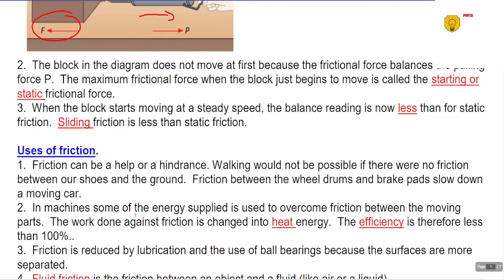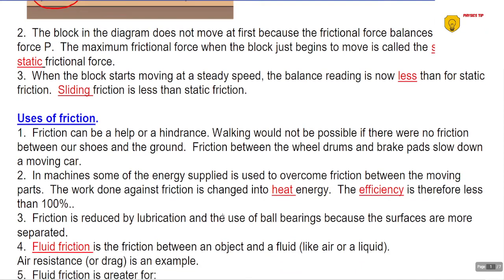In machines, some of the energy supplied is used to overcome friction between the moving parts, and the work that is done against friction is changed into heat energy. The efficiency is therefore less than a hundred percent.